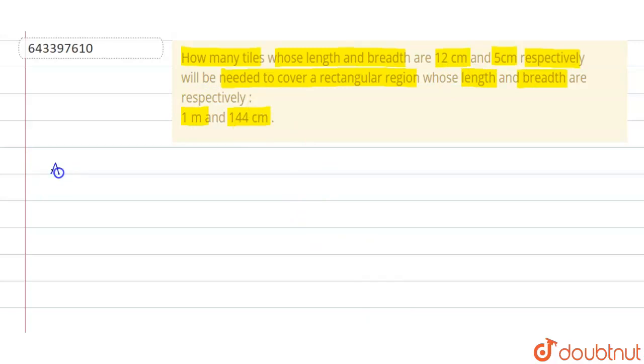First we can find the area of region. That is equals to length into breadth. Now 1m, we need to convert to centimeter, that is equals to 100cm multiply 144cm. That is equals to 14,400 square cm.